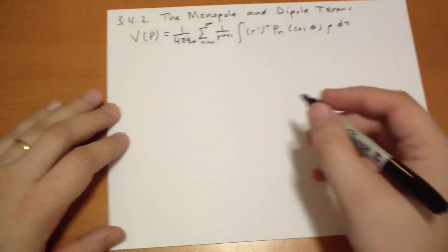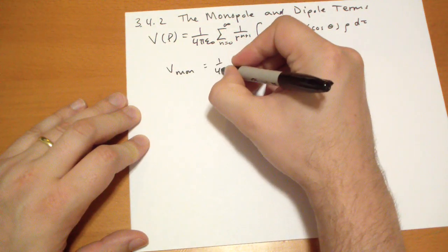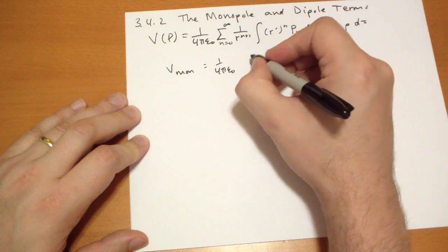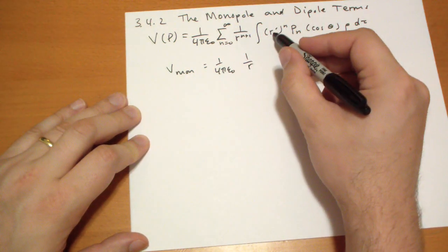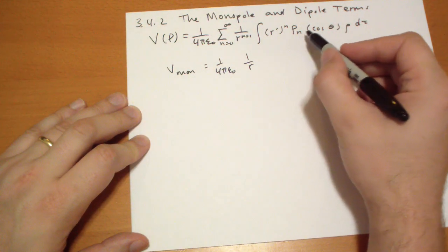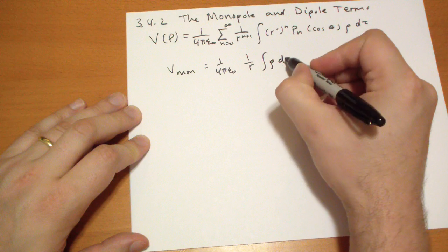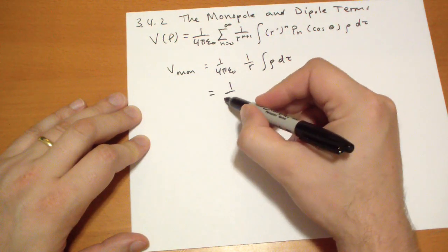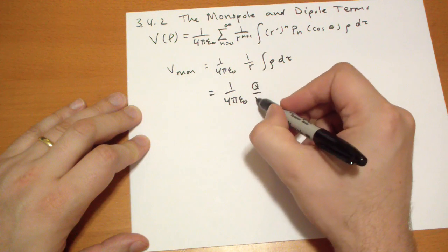The first term is the monopole. It looks like this. It's going to be 1 over r. And the integral is r prime to the zeroth and P_0 which is just 1. So all these terms disappear, and we have rho d tau. Which simplifies to 1 over 4 pi epsilon naught. And this is just the total charge of the configuration, q over r.